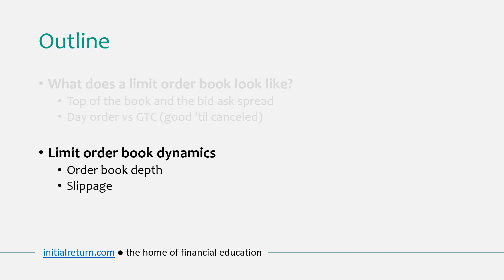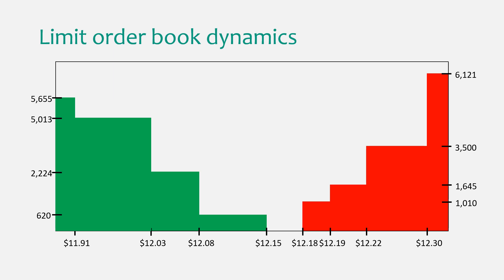Now let's move on to Part 2 and talk about limit order book dynamics. I'll give two examples to illustrate liquidity in relation to market orders and limit orders. We have a separate video on market orders and limit orders as well. First, let's assume you submit a market buy order for 2000 shares. Unlike a limit order, with a market order you don't need to specify a price — you want it executed at the best price possible.